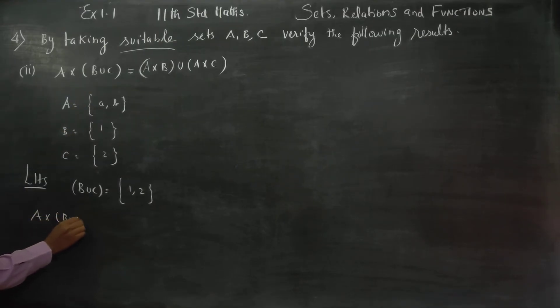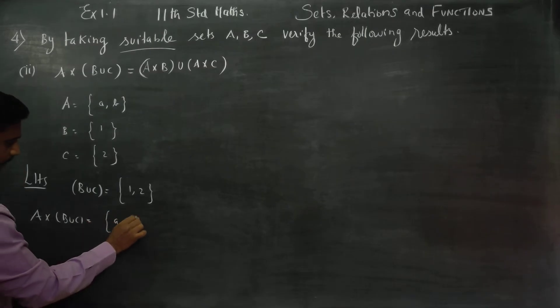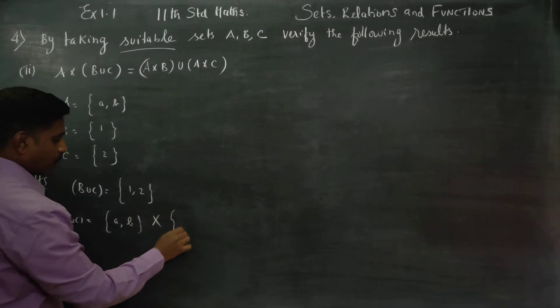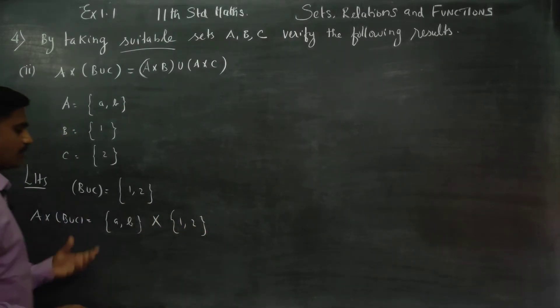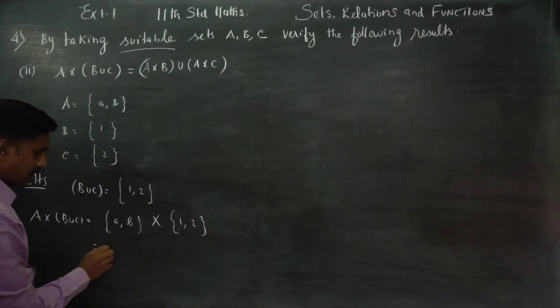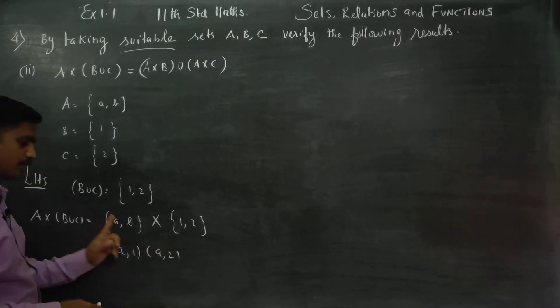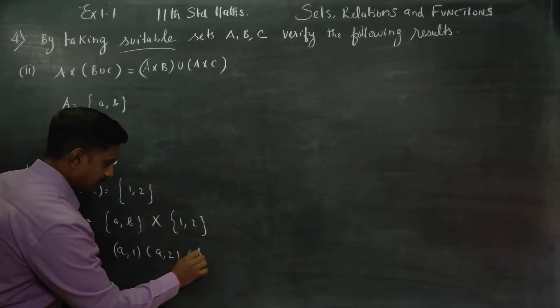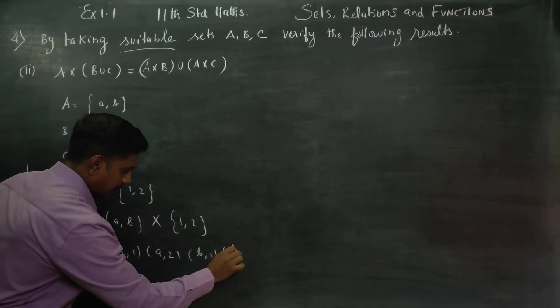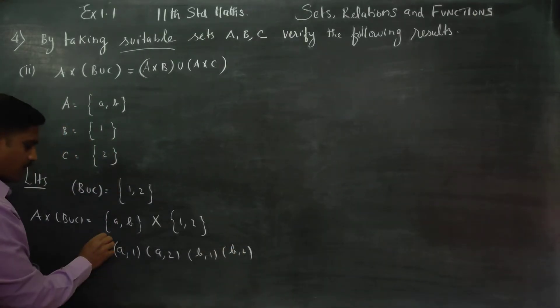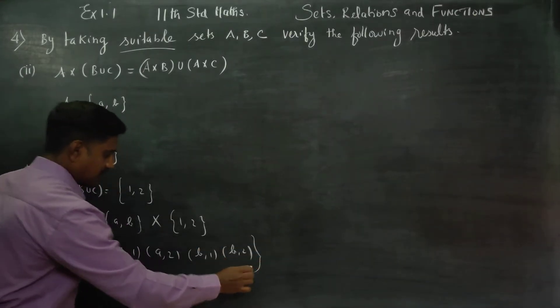A cross B union C. What is my A? A is {a, b}. {a, b} cross what is my B union C? {1, 2}. You have to find the Cartesian product. First (a, 1), then (a, 2), then (b, 1), (b, 2) ordered pairs. The ordered pairs finish the Cartesian product.